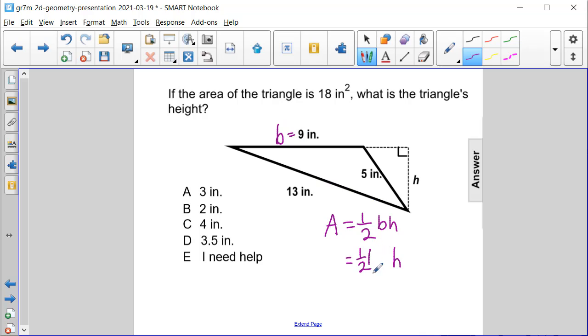So we have 9 here for the base, and we know that our area is 18 square inches. So now we can multiply one-half times 9 and get 4.5, or 4 and 5 tenths as a decimal, and then that's equal to 18. And in order to solve for h, we're going to divide both sides by 4.5, or 4 and 5 tenths.